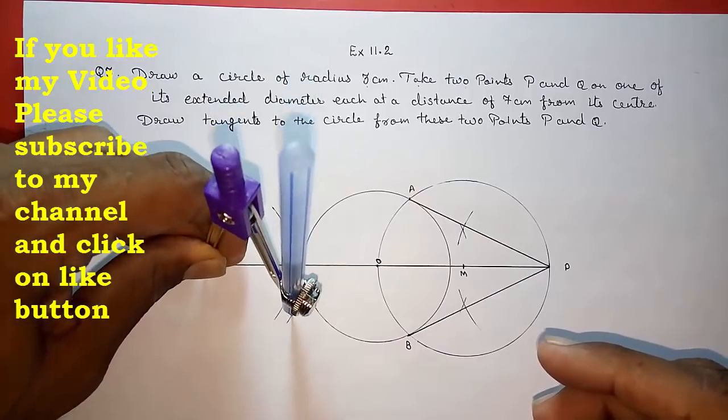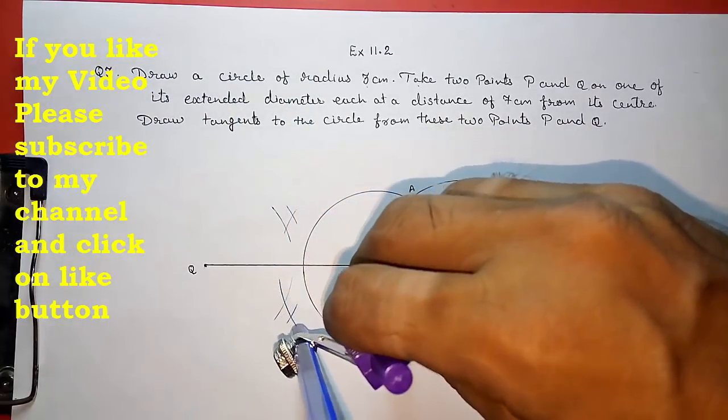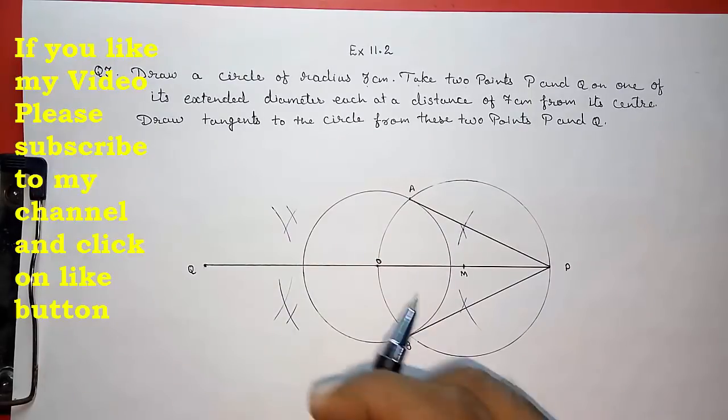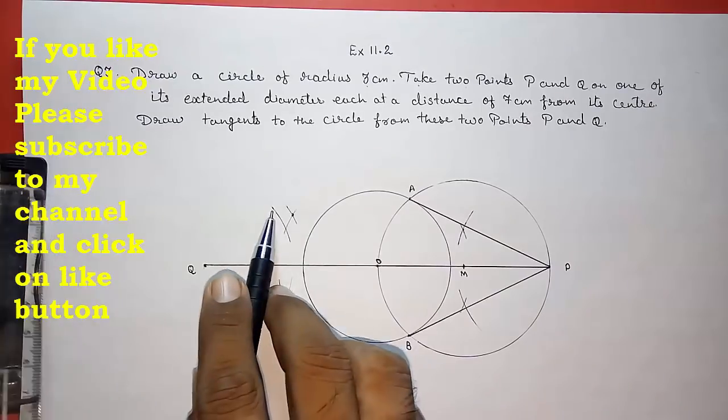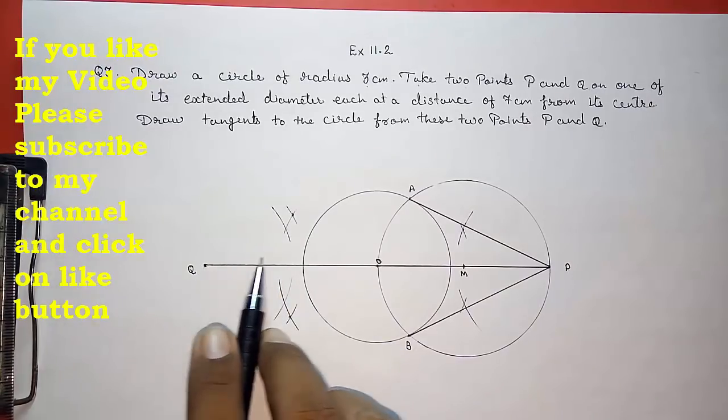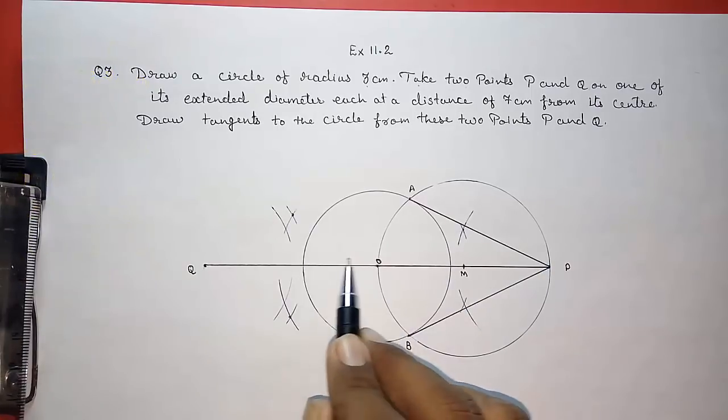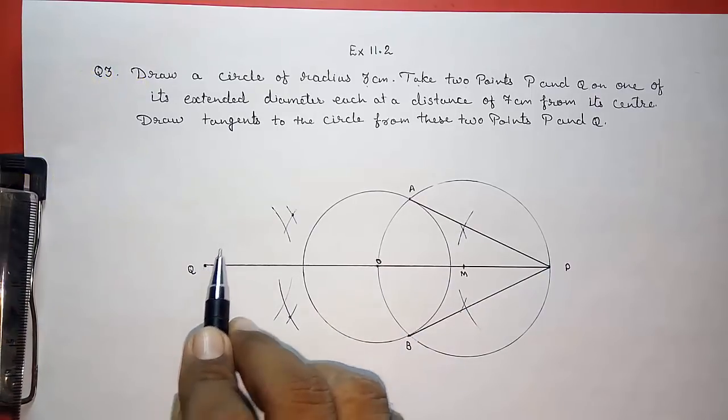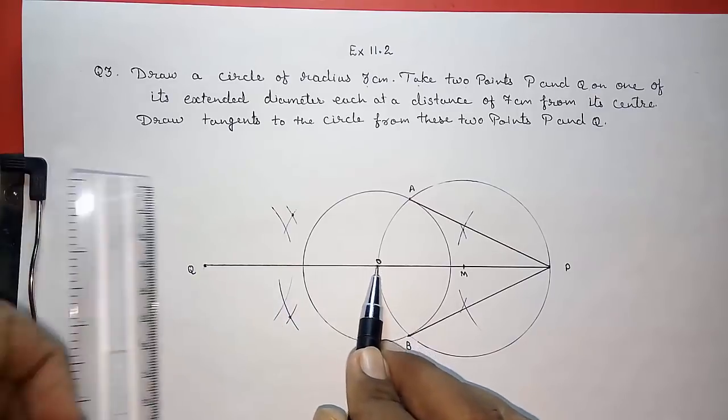These are the two intersecting points. Still I am making mistake. Yes. So these are the two perpendicular bisectors. I am drawing it with black pen so that you can see. This is wrong because I have not taken more than half. I told you in the beginning also in my previous video also that we have to take this measurement for perpendicular bisector more than half of the distance.